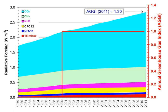Carbon dioxide, methane, nitrous oxide, and three groups of fluorinated gases — sulfur hexafluoride, hydrofluorocarbons, and perfluorocarbons — are the major anthropogenic greenhouse gases, and are regulated under the Kyoto Protocol International Treaty, which came into force in 2005.